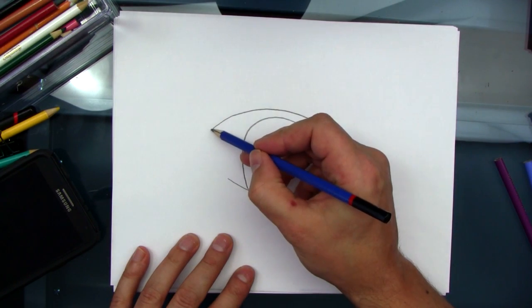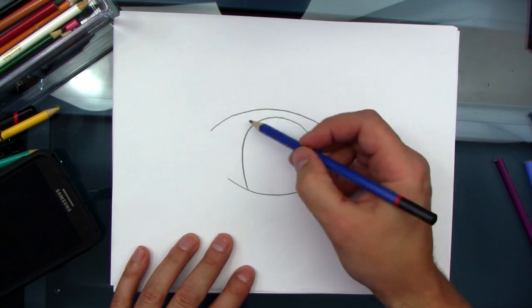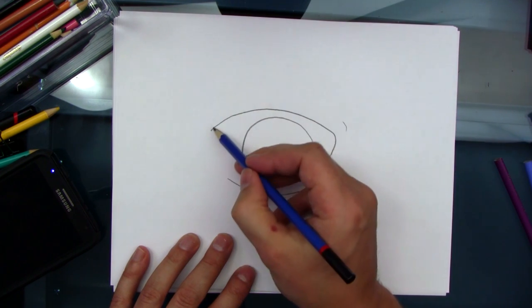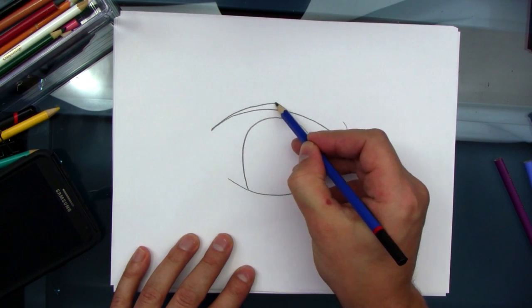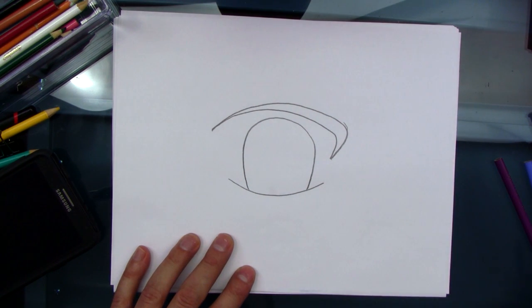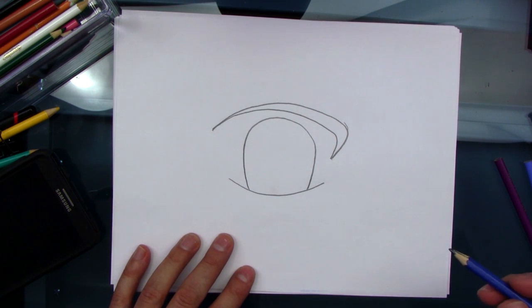Next up, we do another line just to thicken the eyebrow. So, we'll start from here. It goes to a point. It's gonna curve around here, and it can meet to a point there. So, like this. There we go. It's starting to look like an eye now, isn't it?